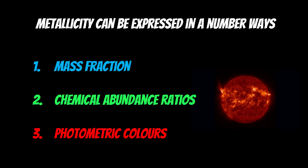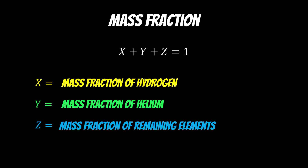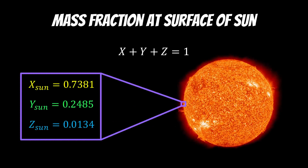There are a few ways you can express or calculate metallicity. You can use the mass fraction, the chemical abundance ratios, or the photometric colours. The mass fraction is simply the fraction of the mass in the star, given by the equation: the mass fraction of hydrogen plus the mass fraction of helium plus the fraction of remaining elements — the metals — equals one. For the sun, at the surface, just under 74% is hydrogen, just under 25% is helium, and just over 1% is the remaining metals. So stars are still predominantly hydrogen, even with increasing metal production.